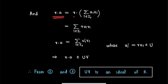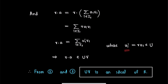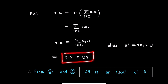Further, r·a equals r·(summation u_i v_i) for i in index set i1, which equals summation (r · u_i) v_i for i in i1, where u_i' = r · u_i is an element from ideal U. Therefore r·a is an element from set UV. Thus from steps one and two, we conclude that UV is an ideal of ring R, which proves our result.